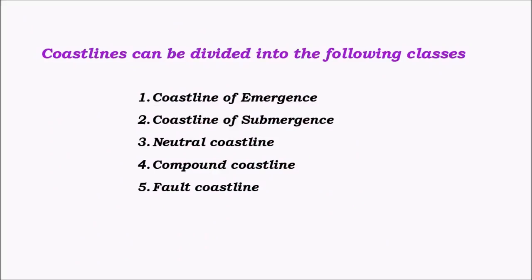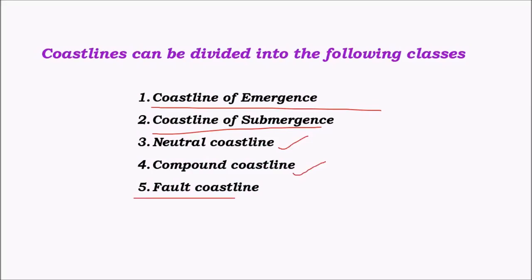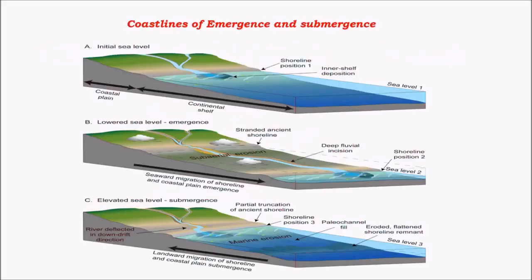Coastlines are classified into different categories: mainly coastline of emergence and coastline of submergence. Based on the presence or absence of these, there is also neutral coastline and compound coastline. Another type is the fault coastline. The coastline of emergence or submergence is simply formed based on whether the sea level goes above or below.